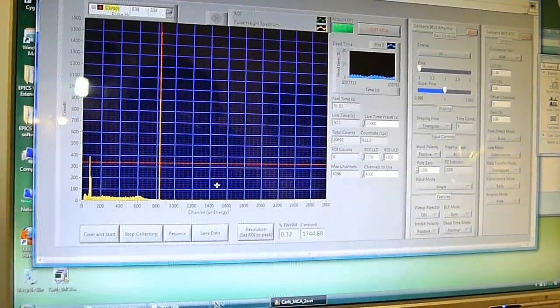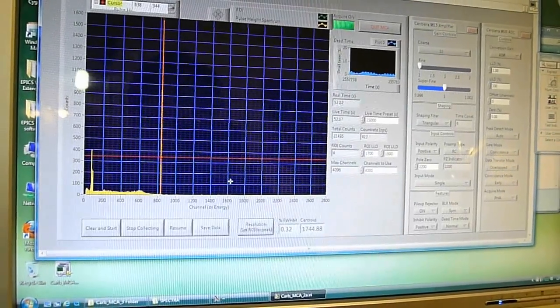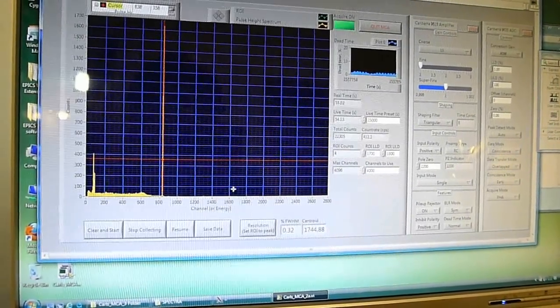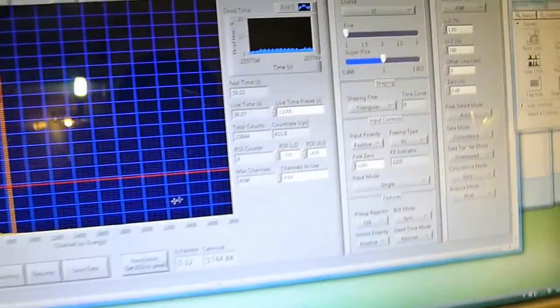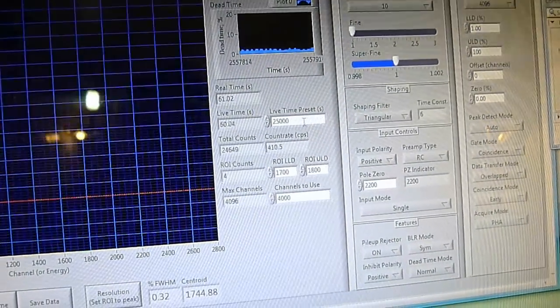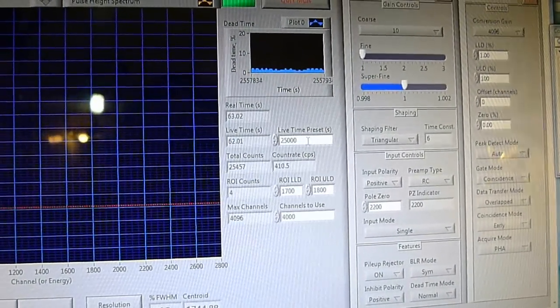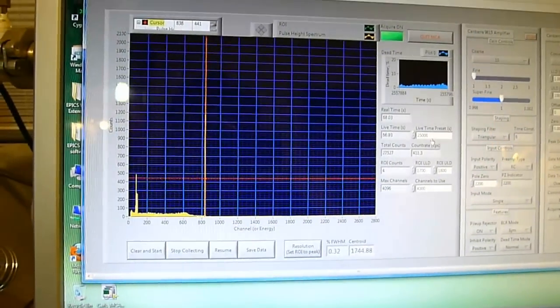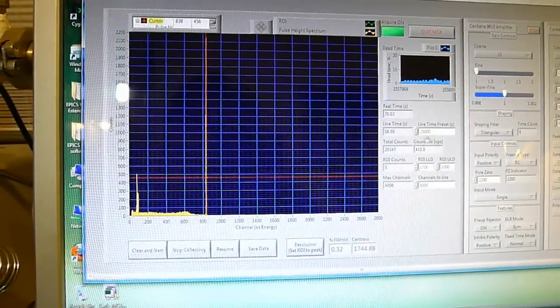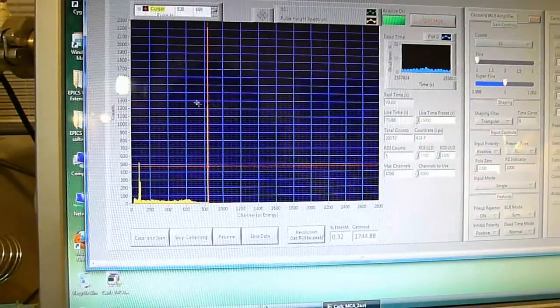But we are actually looking for a gamma ray that's further out here somewhere. And there may not be evidence of it for several hours. You can see I've set the live time, I've set this to count for 25,000 seconds. So it's going to count overnight. We're going to do this experiment overnight.